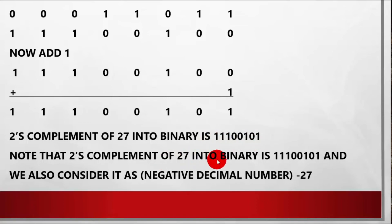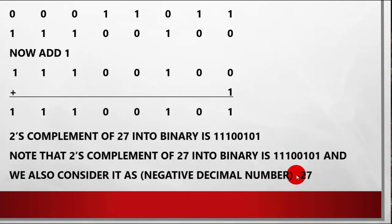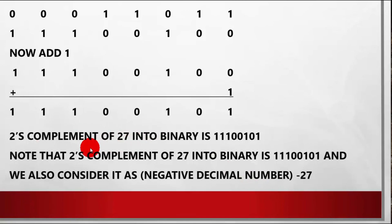The 2's complement of 27 in binary is 11100101, and we also consider it as a negative decimal, because the next topic covers negative decimals. Whatever the positive decimal is, we will also consider it in negative decimal — but we will study that later. This is just an introduction to the next topic. This is how you convert a decimal number to binary using the 2's complement method.